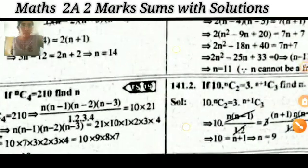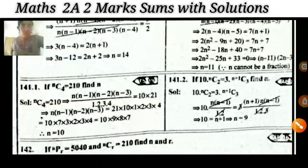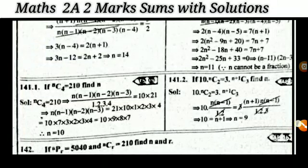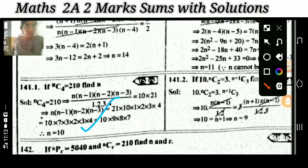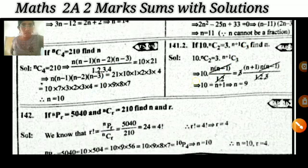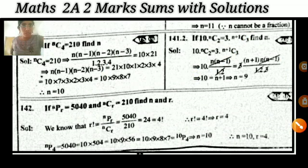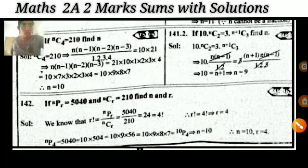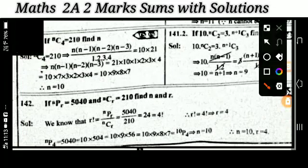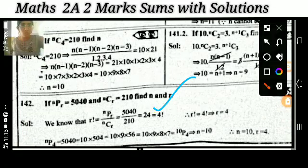If nC4 = 210, then find the value of n. If 10 × nC2 = 3 × (n+1)C3, then what is the value of n? And: if nPr = 5040 and nCr = 210, then what are the values of n and r?